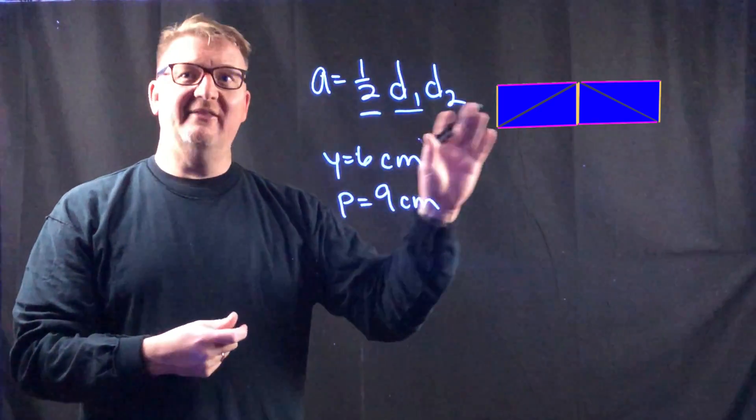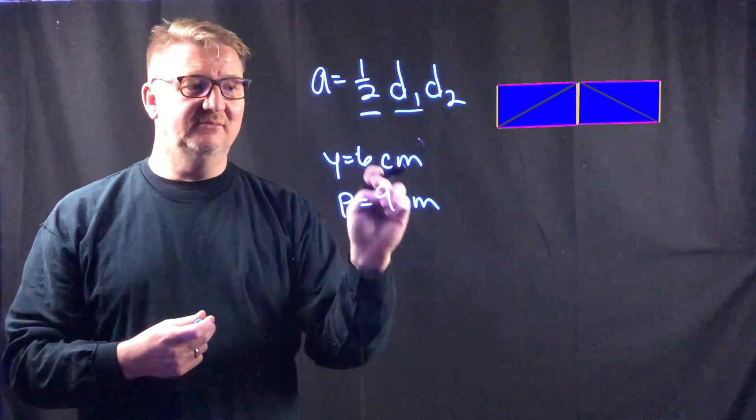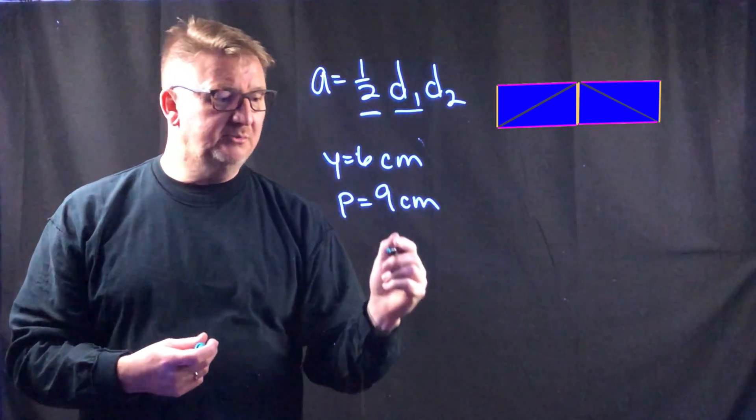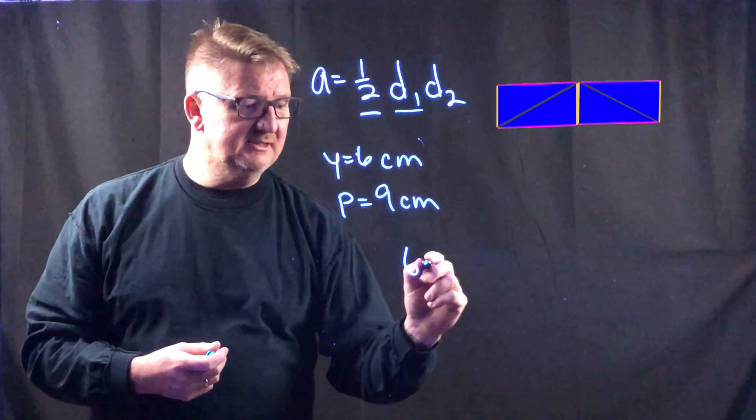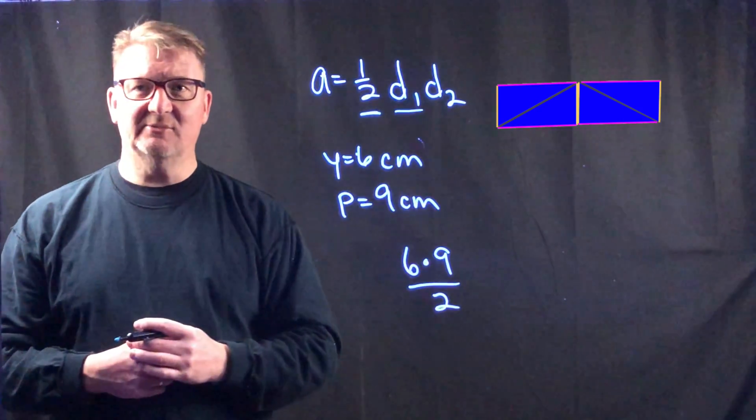In order to find the area of this rhombus, all you have to do is follow this equation. You take these two diagonals, you can multiply them together, and say 6 times 9. And then we just want to divide that answer by 2.